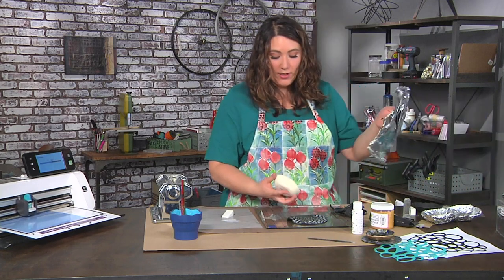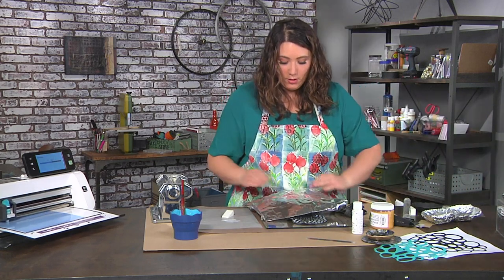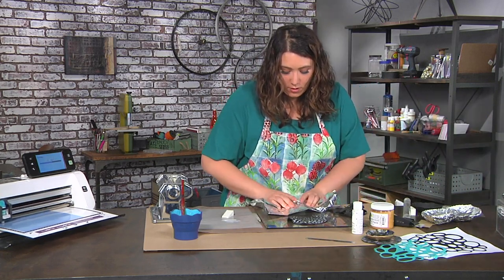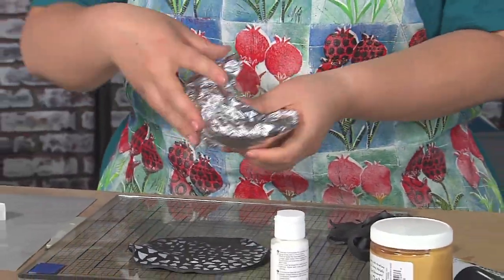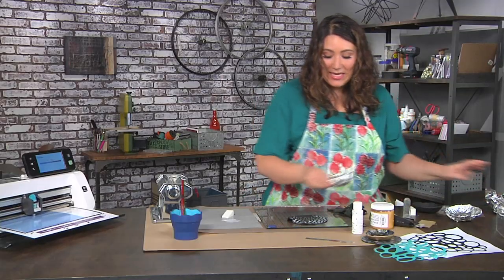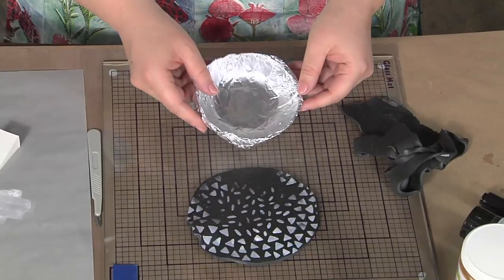And I'm going to go ahead and create a mold by taking some tin foil, pushing it over, and just wrapping it around. Okay, and I would take some time to scrunch it. And when it's done it looks like this and it's ready to go.